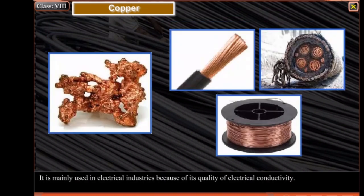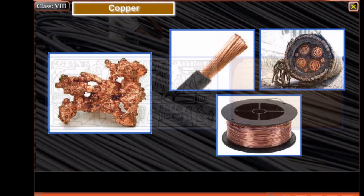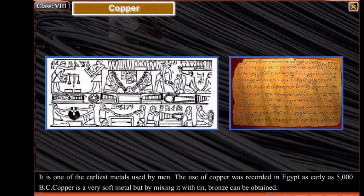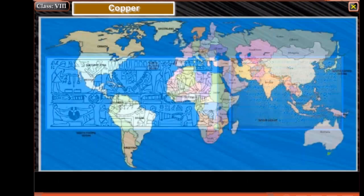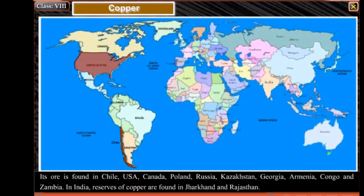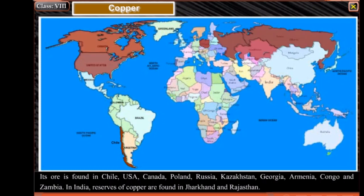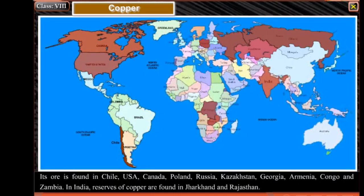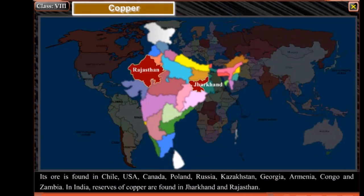Copper is mainly used in electrical industries because of its quality of electrical conductivity. It is one of the earliest metals used by men. The use of copper was recorded in Egypt as early as 5000 BC. Copper is a very soft metal, but by mixing it with tin, bronze can be obtained. Its ore is found in Chile, USA, Canada, Poland, Russia, Kazakhstan, Georgia, Armenia, Congo and Zambia. In India, reserves of copper are found in Jharkhand and Rajasthan.